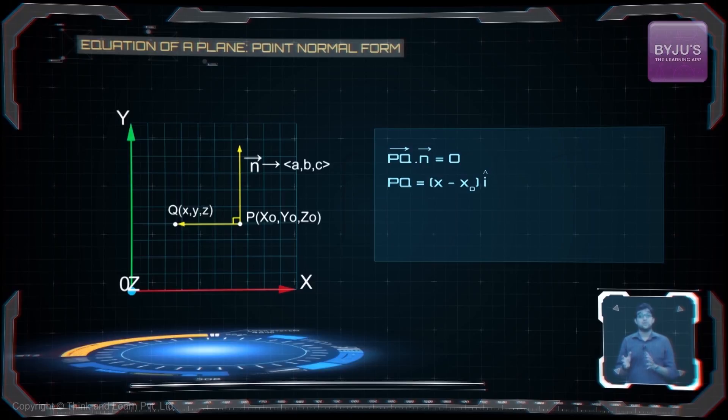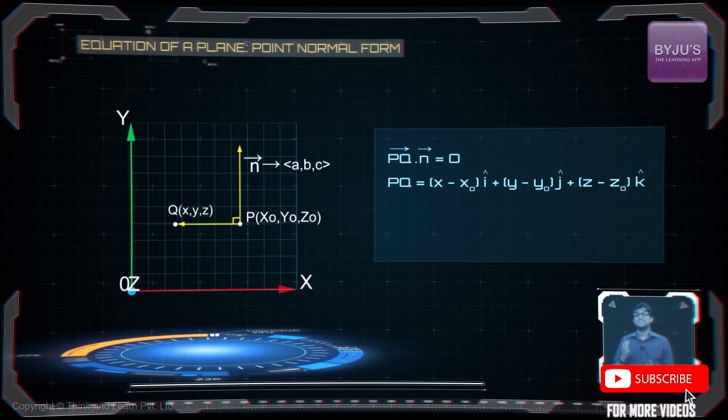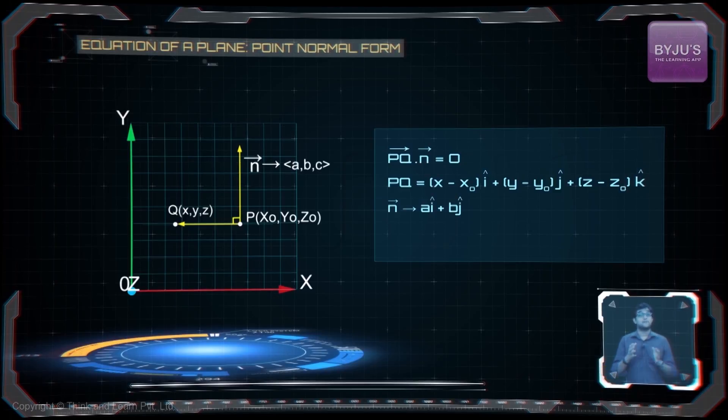We have got the vector PQ equal to x minus x naught i cap plus y minus y naught j cap plus z minus z naught k cap, and vector n is ai plus bj plus ck. So we get a into x minus x naught plus b into y minus y naught plus c into z minus z naught equal to zero.